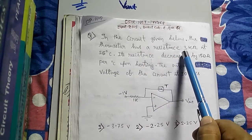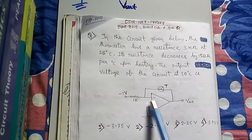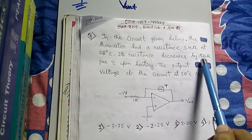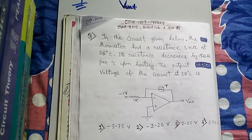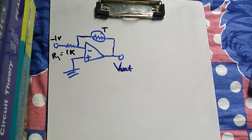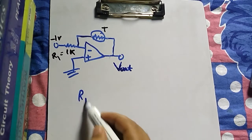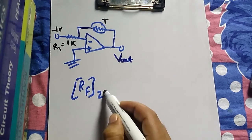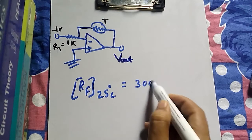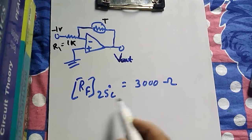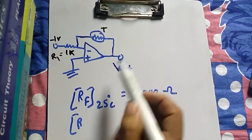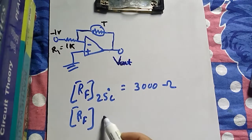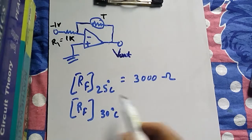At 25 degrees Celsius, the resistance of the thermistor is 3k ohm, but when we take this circuit to 30 degrees Celsius its resistance decreases. The rate of decrease is 150 ohm per degree Celsius. So the feedback resistance RF at 25 degrees Celsius is 3000 ohm, and we need to find RF at 30 degrees Celsius.